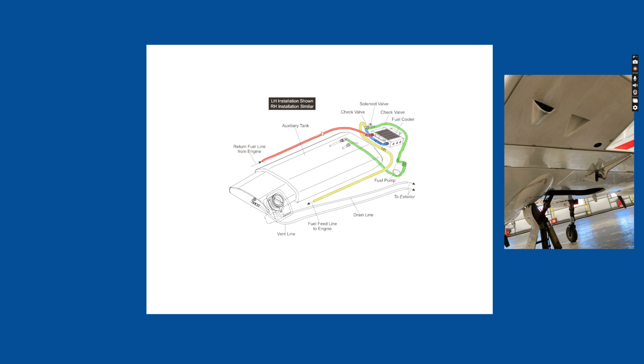So here's the heated fuel coming back from the engine. It goes into the fuel cooler, gets cooled, and then comes out here. And this is where it meets up with the fuel from the aux tank. And then that all continues on to go back to the wing tank and eventually to the engine.